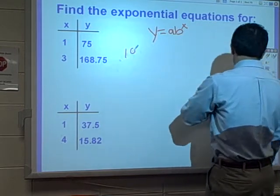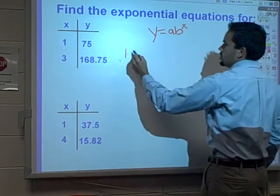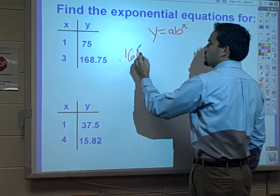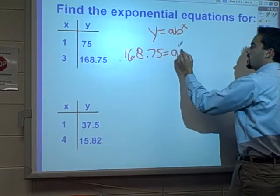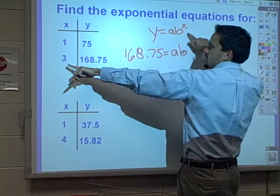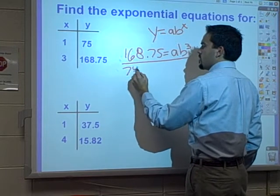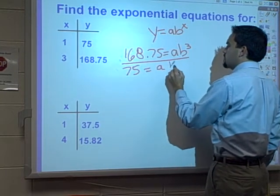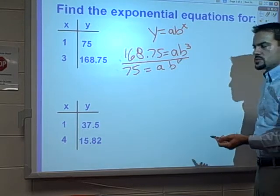take 168.75 equaling ab to the third. Taking out the y, plugging in the y, taking out the x, plugging in the x value that gives us the start. Divided by 75 equaling ab to the first power. So now you can see I've got kind of a division problem set up here.